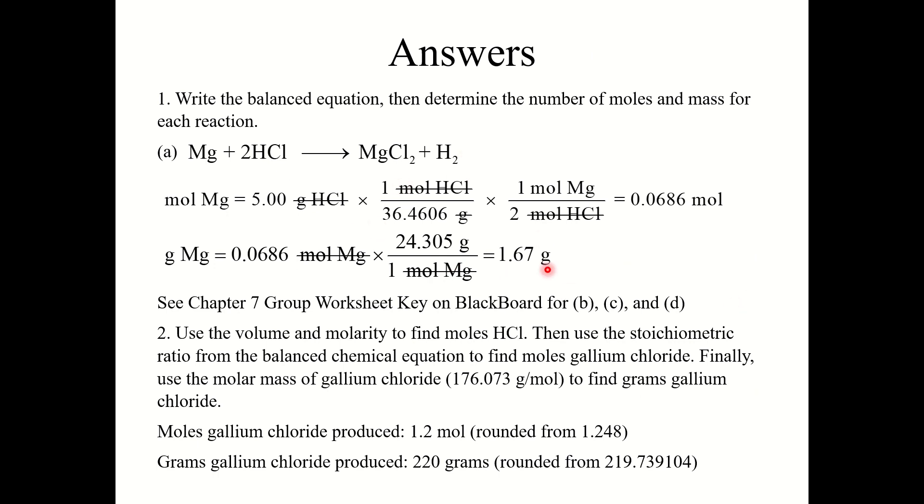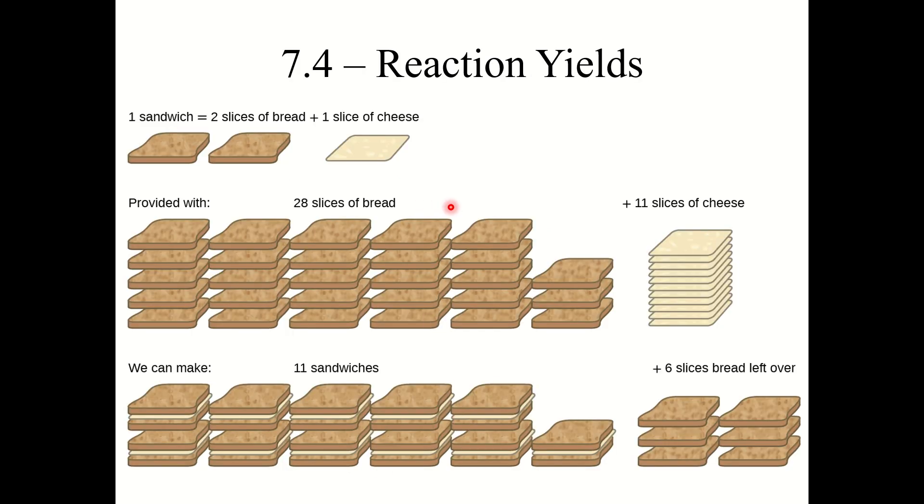Here's the answer for 1A. You can find B, C, and D on the chapter 7 group worksheet key. And here's the answer for number 2. So that concludes section 7.3. I'll see you in the next one for section 7.4 reaction yields.